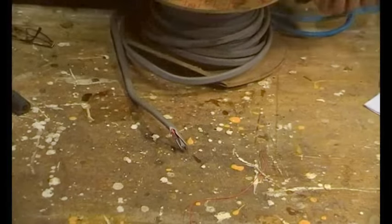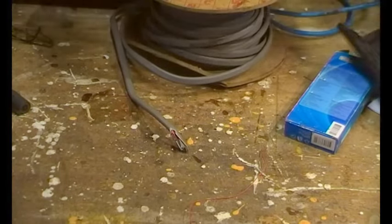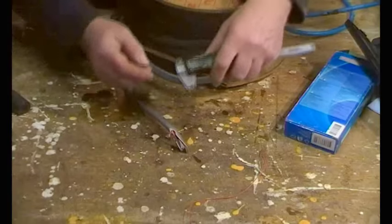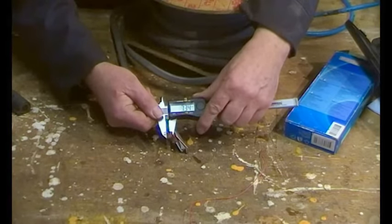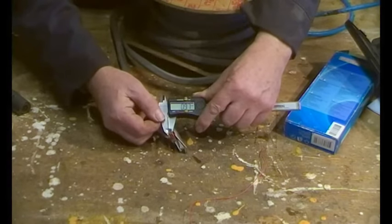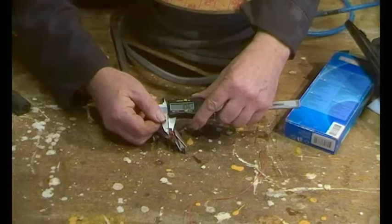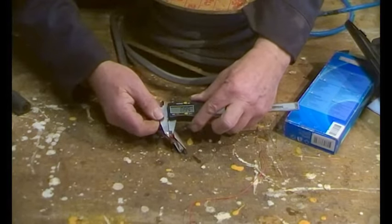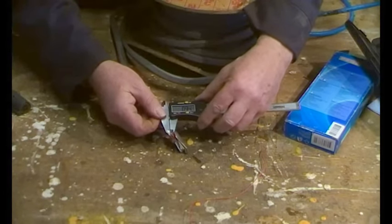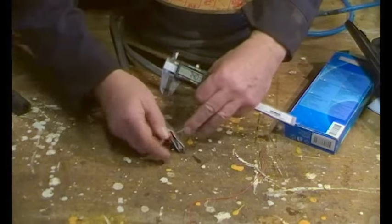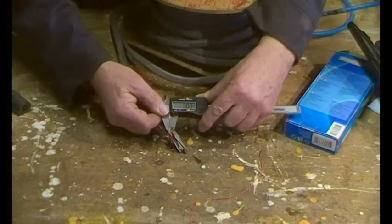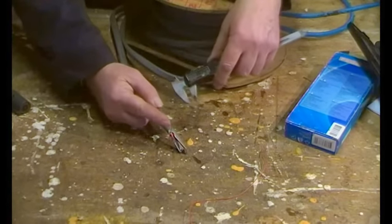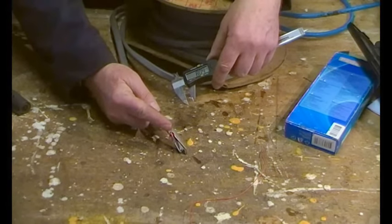First of all, we'll get a vernier caliper. Let's switch it on, and it's on millimeters. Try and do it so you can see it. Let's just get it square. There's one point oh six. Let's try another one. Point nine three. Point nine four. Point nine nine. I'm assuming the average is about one mil, and there are seven of them. But we need to work out what the cross-sectional area of that is.